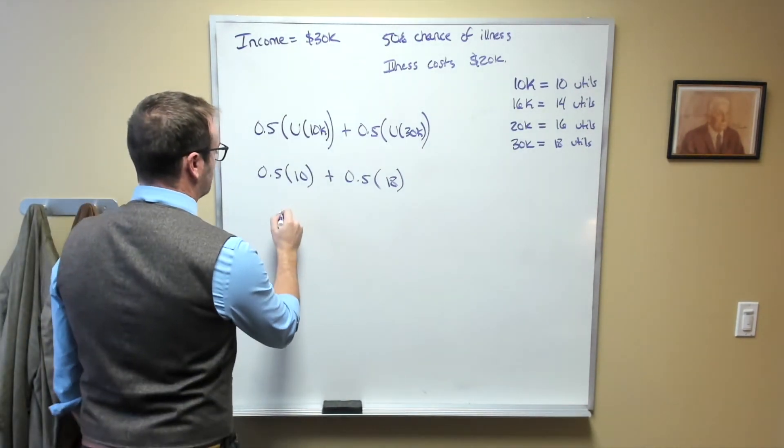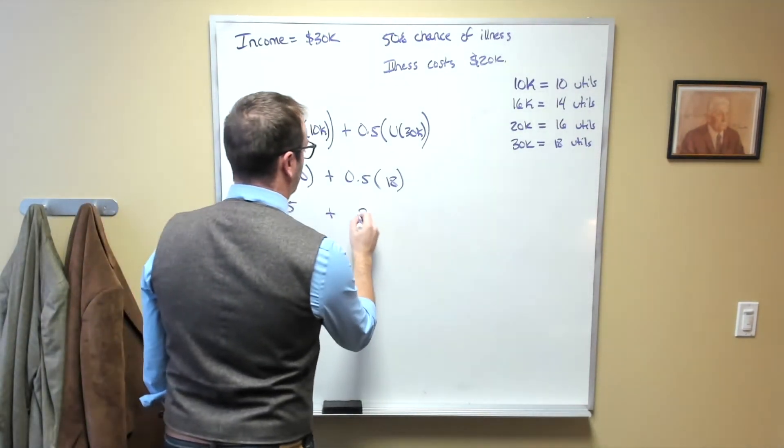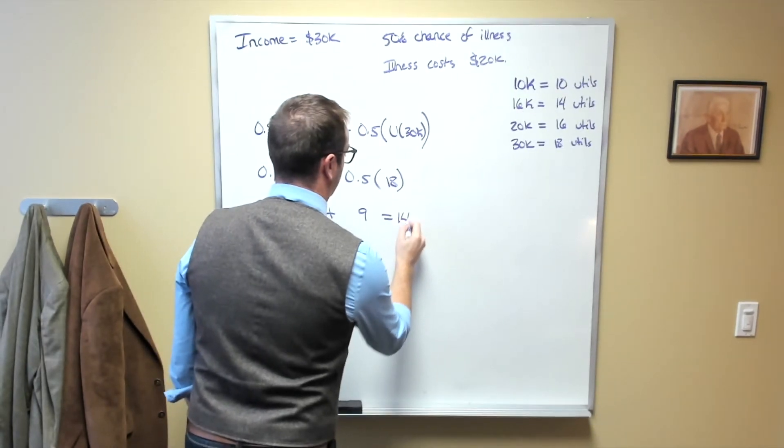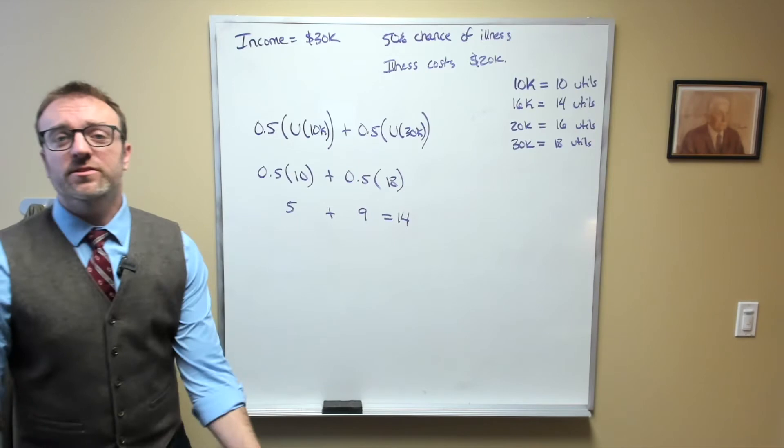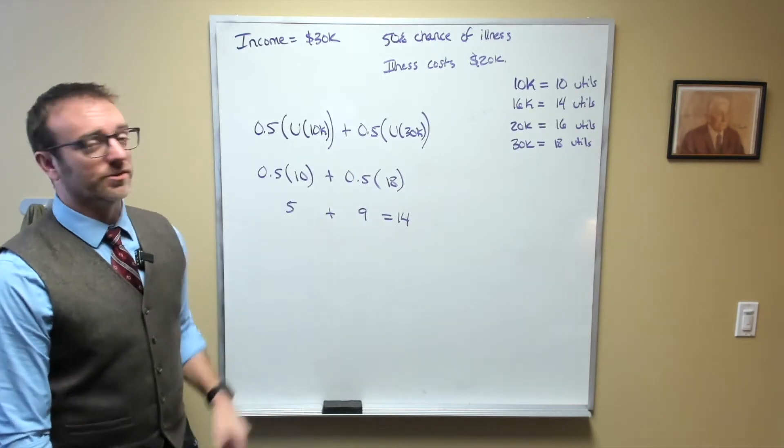And that is going to be equal to 5 plus 9, which is 14. So this person's expected utility per year is 14 utils.